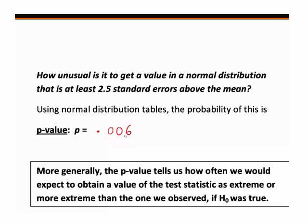The probability of getting a value in the normal distribution at least 2.5 standard errors above the mean is actually 0.006, correct to three decimal places. So in the context of our example, if the true mean IQ of students was only 100 as suggested by the null hypothesis, we really would have drawn quite an unusual sample, because only 6 in 1000 sample means would be as high or higher than our observed value of 107.5. More generally, the p-value tells us how often we would expect to obtain a value of our test statistic as extreme or more extreme than the one we observed if H0 was true, and smaller p-values give greater evidence against H0.